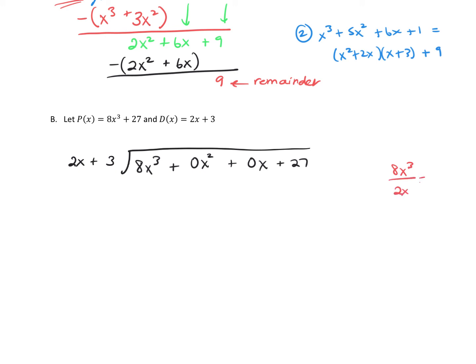Take the leading term: 8x³ divided by the leading term 2x. 8 divided by 2 is 4, and x³ over x is x², so we get 4x² up top. Now multiply 4x² through: 4x² times 2x is 8x³, and 4x² times 3 is positive 12x². Put parentheses around that and subtract — 8x³ minus 8x³ is 0.